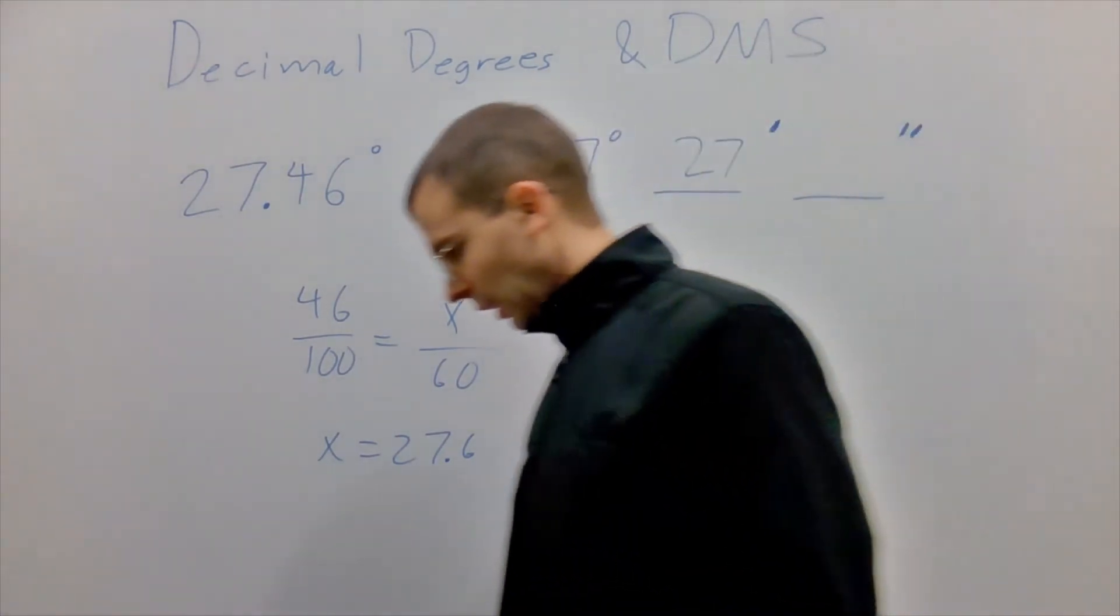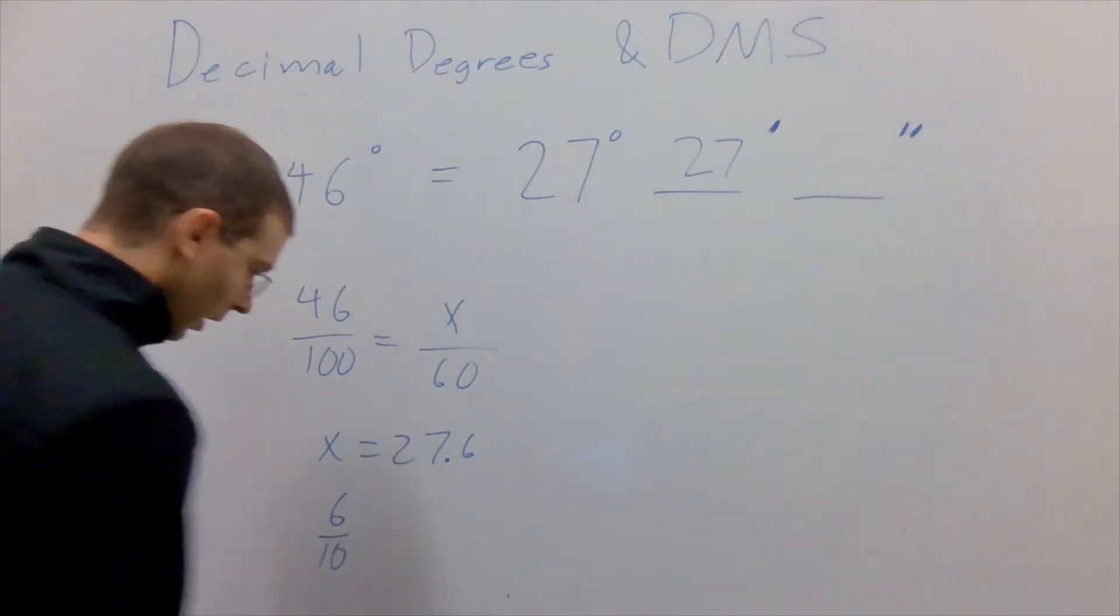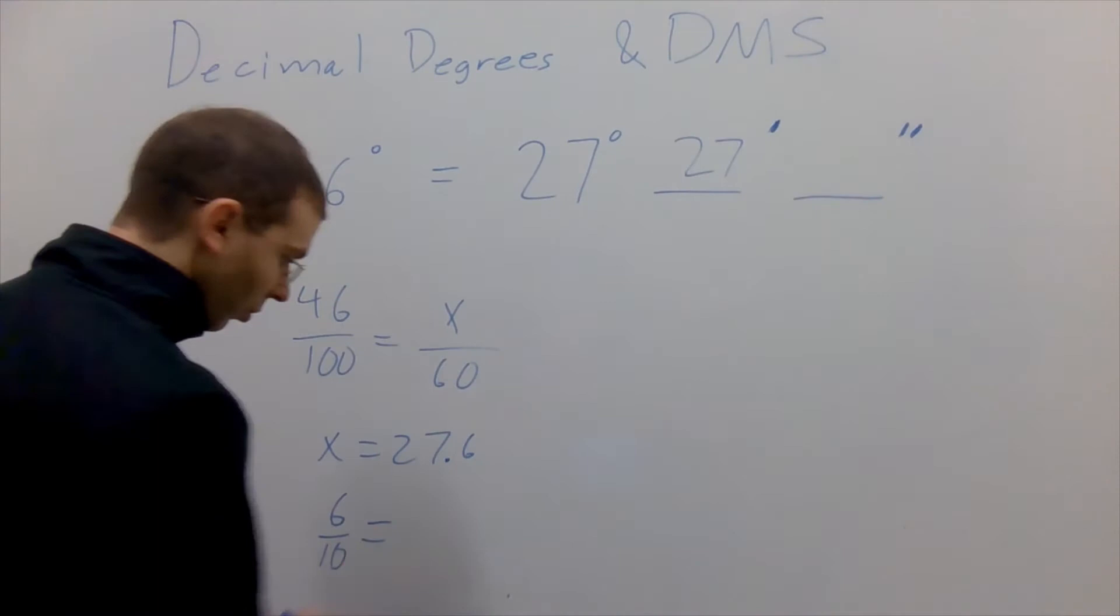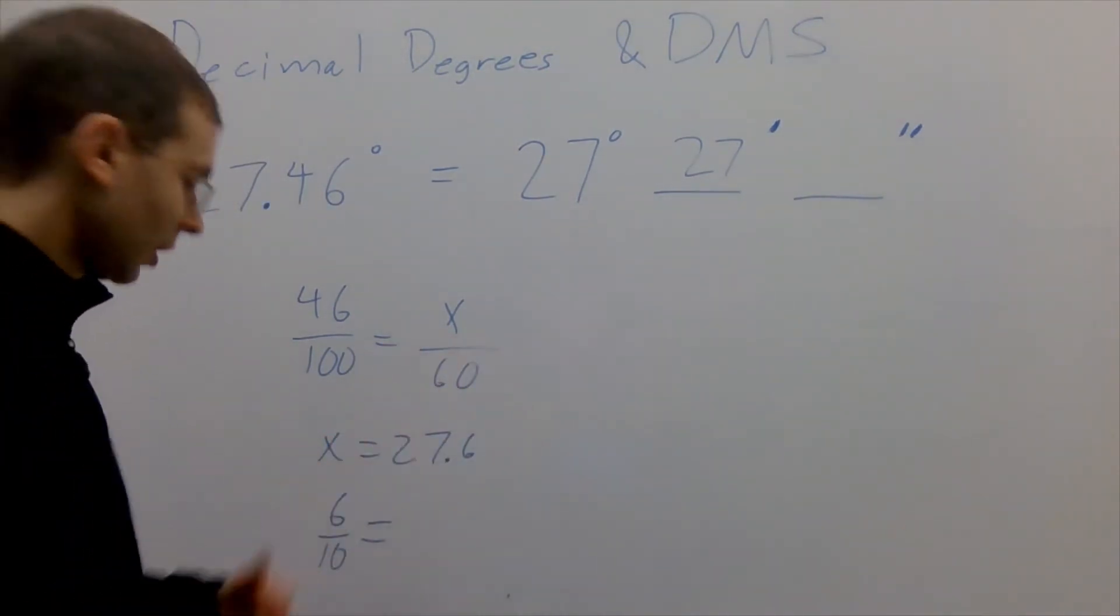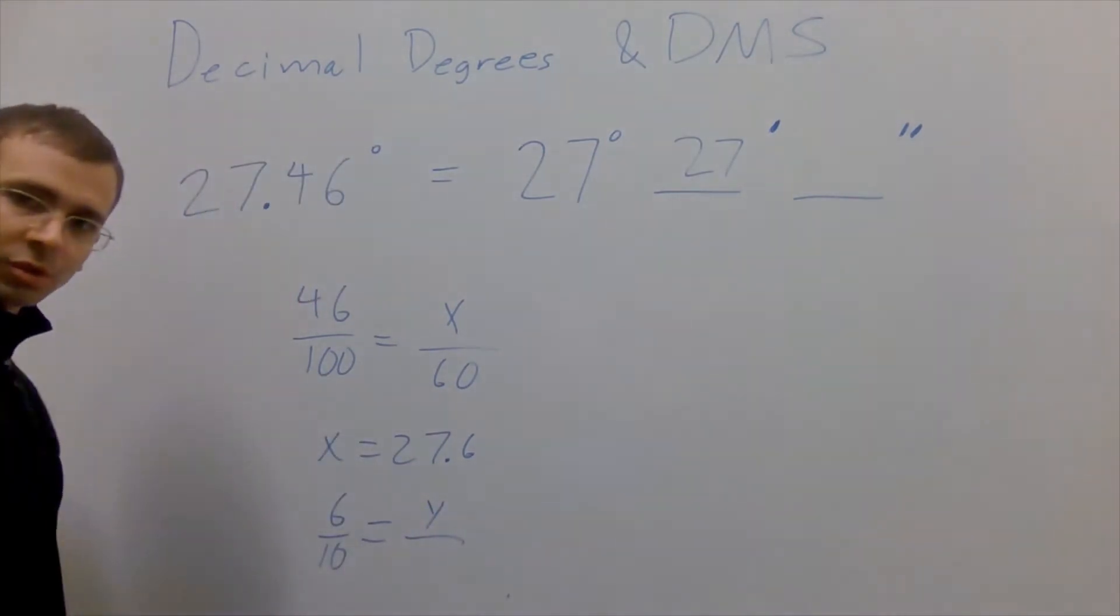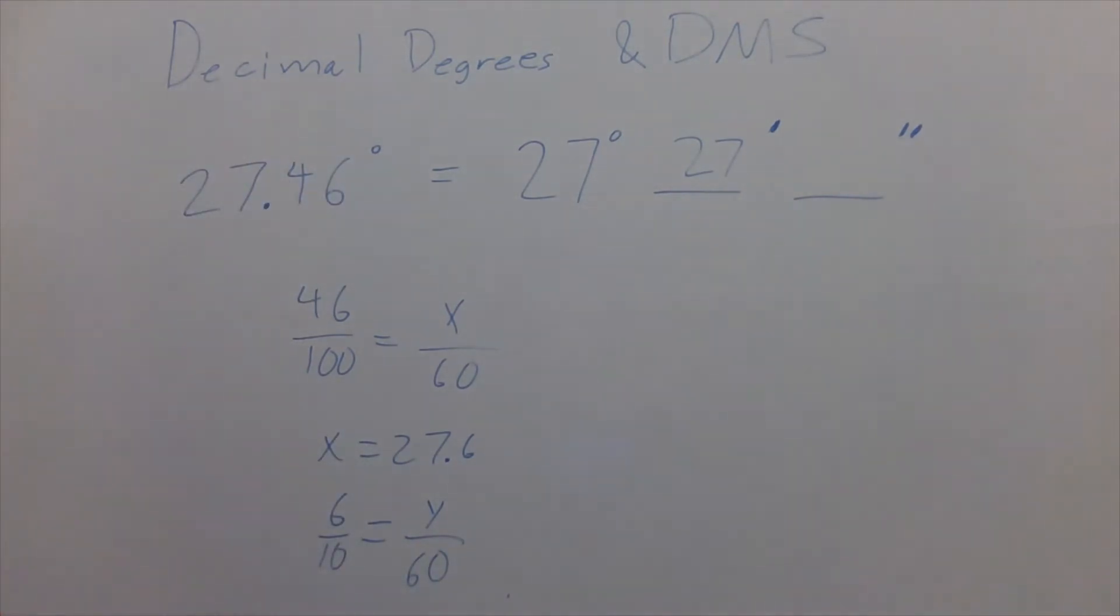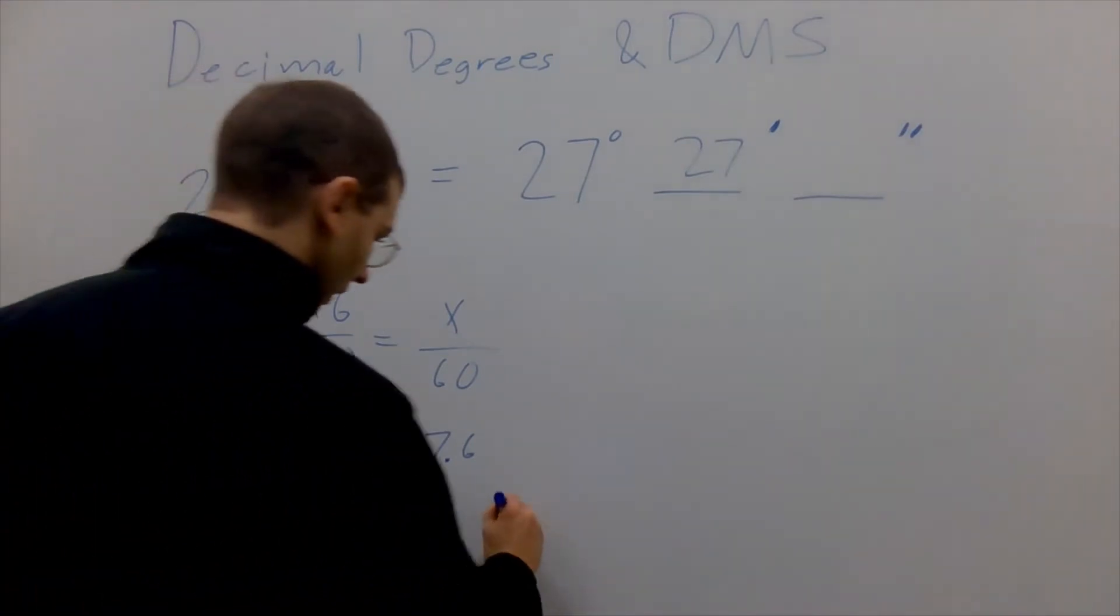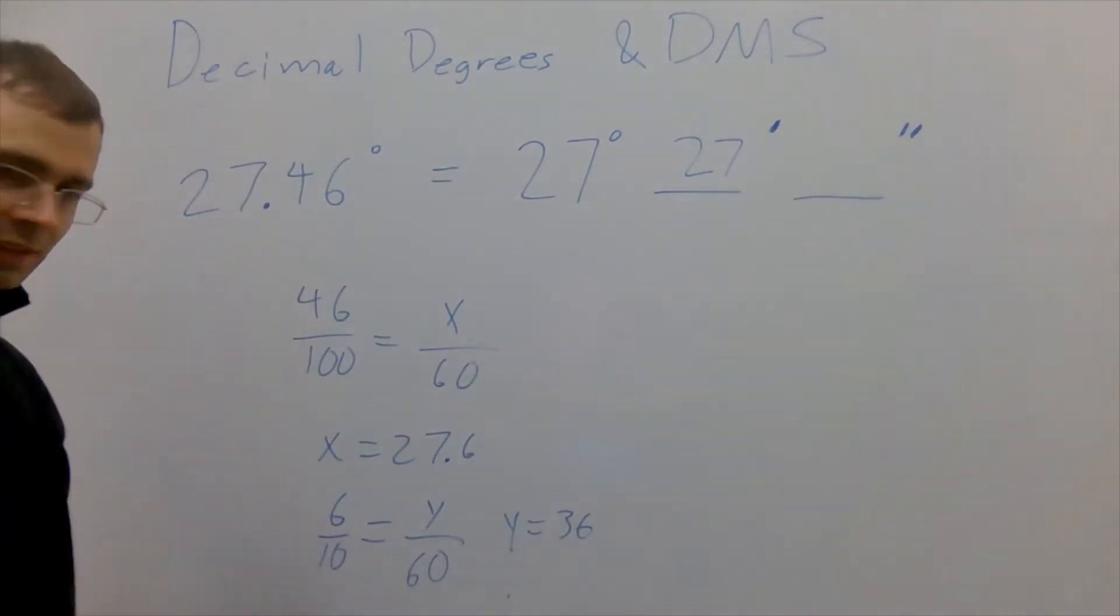Now that .6, that means six-tenths of a minute and we want to put that in terms of seconds. There's 60 seconds in a minute, we have a similar problem here where we want to know how many sixtieths that would be. Again solving that little equation we get 0.6 of a minute is 36 seconds.